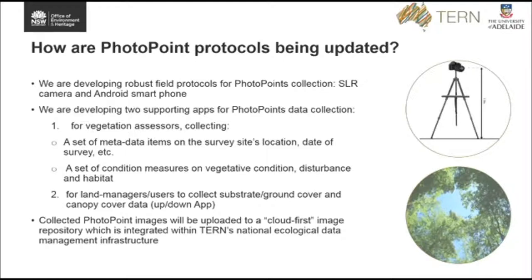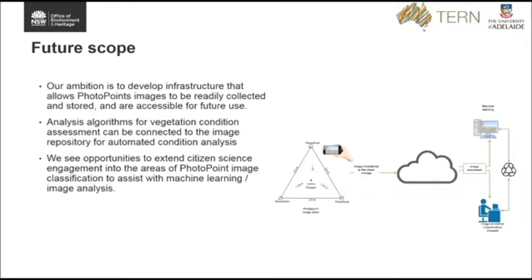The second app — currently called the UpDown app — allows the user to collect ground cover and canopy cover images. These collected photo point images will then be uploaded into a cloud-first image repository, which is the Integrated Returns National Ecological Data Management Infrastructure. We are building all of this and putting the protocols in place to start future proofing for the extraction of quantitative information over qualitative information, and to allow citizen scientists to capture photo points while also putting in place image classification — something we want to move towards for training machine learning and image recognition in the future.